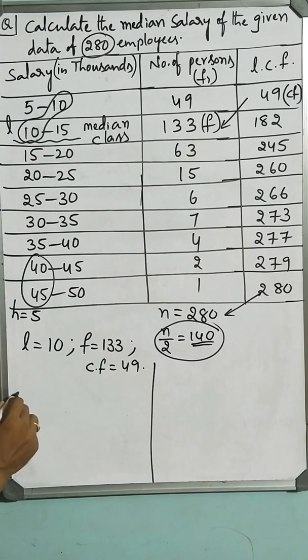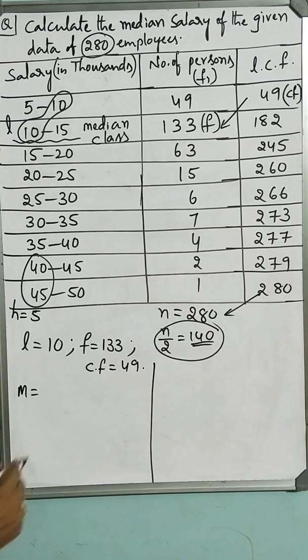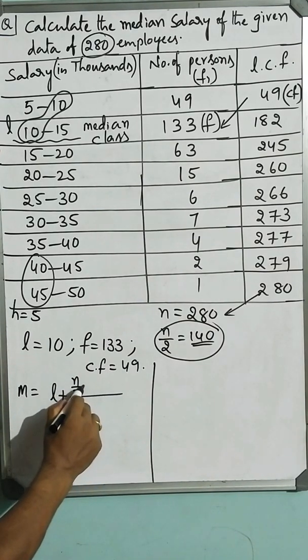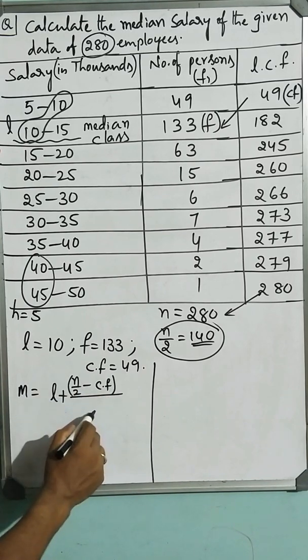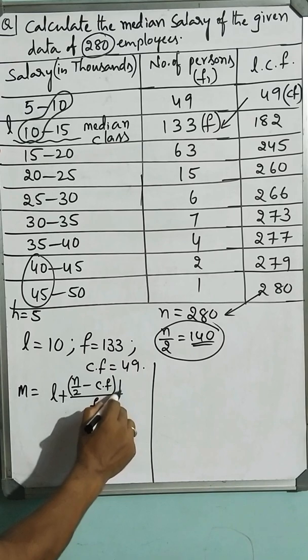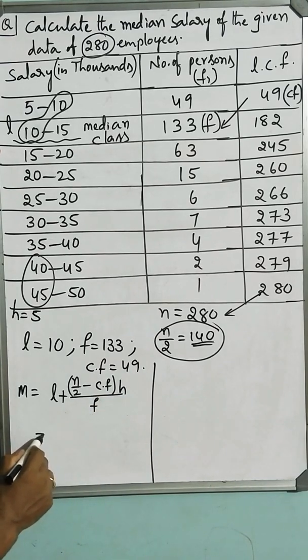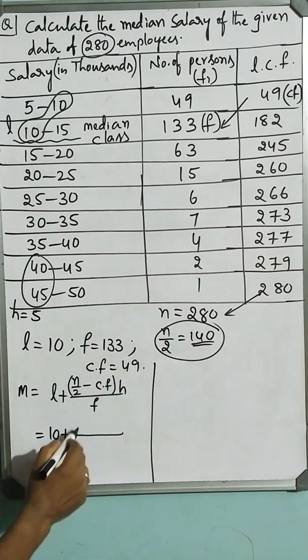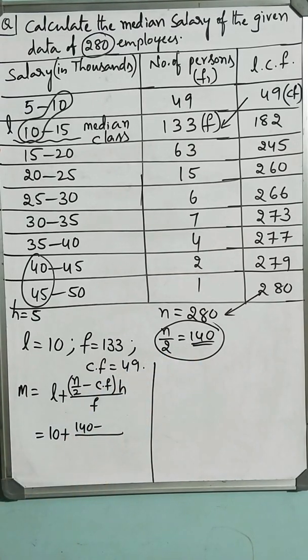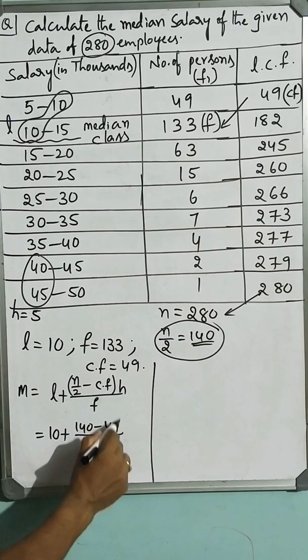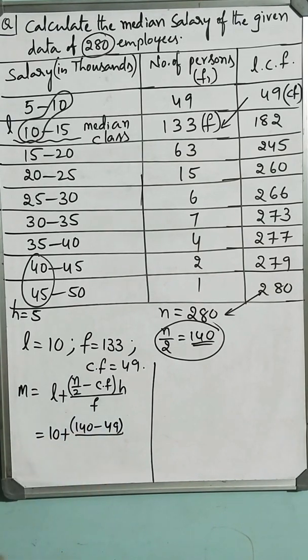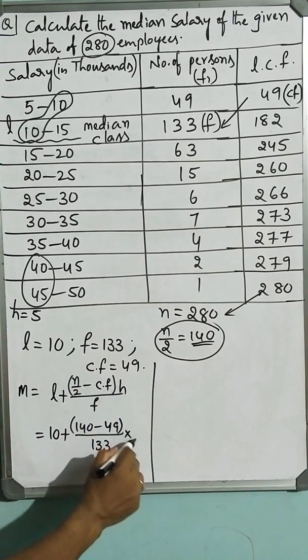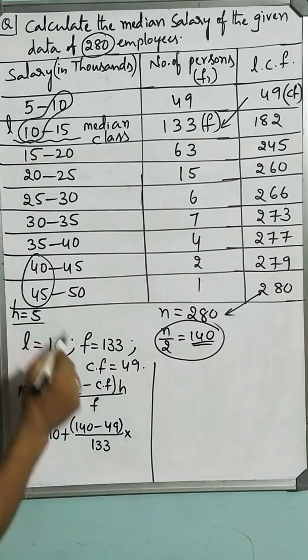We have the formula for median. Again, m is equal to l plus n by 2 minus cumulative frequency by median frequency into h. Let us substitute the values. 10 plus n by 2, 140 minus cumulative frequency, 49 by 133 into class height 5.